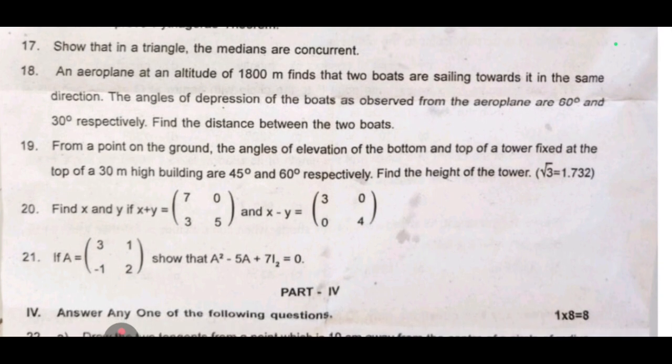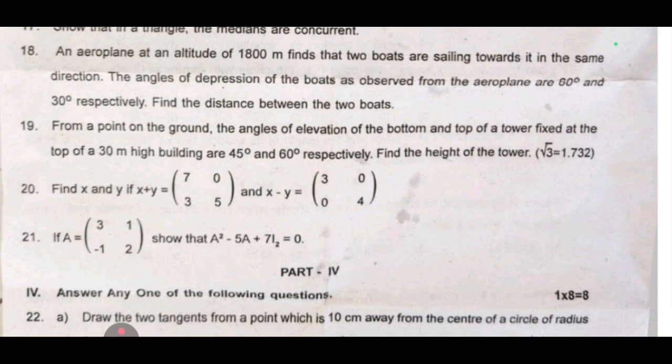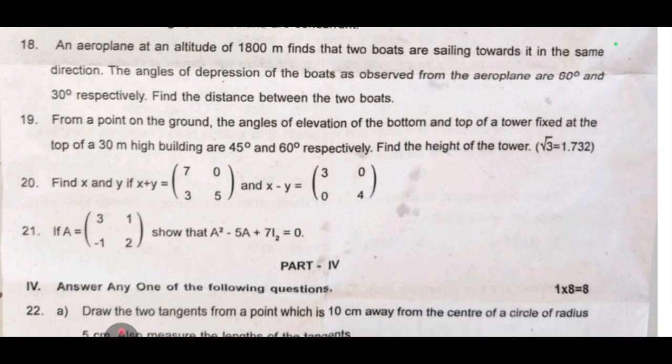19th one: from a point on the ground the angles of elevation of the bottom and top of a tower fixed at the top of a 30 meter high building are 45 and 60 degree respectively, find the height of the tower.